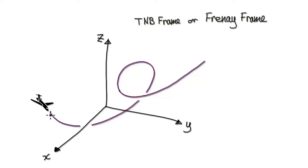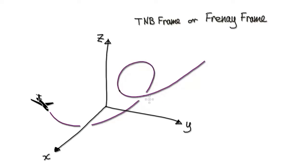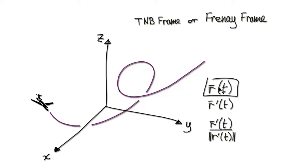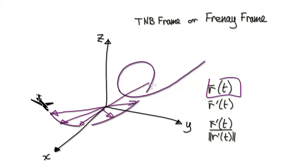Imagine the pilot or the particle moving along this path. It's currently here. If you look at the position vector, it tells us the vector from the origin to the location of the plane or the particle as it's moving around. Now if you differentiate the position vector, it will give you the tangent vector.